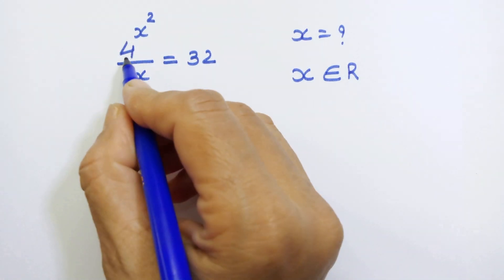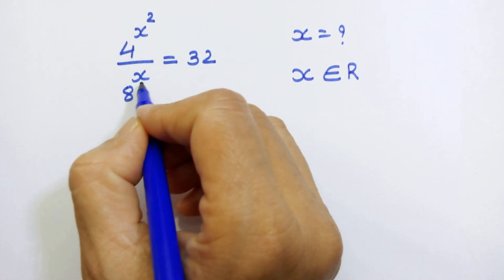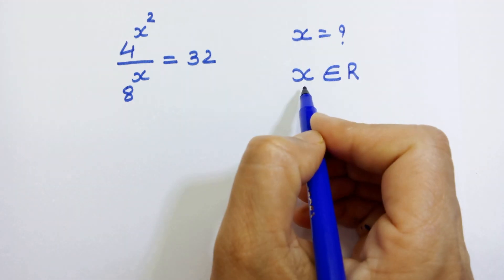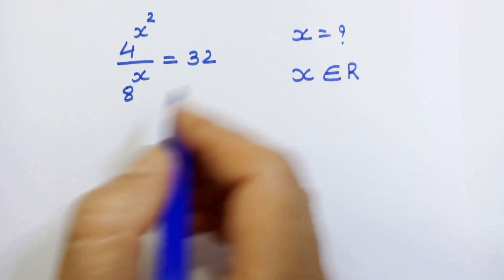Hello friends, now here we have 4 raised to x square upon 8 raised to x is equal to 32 and we have to find the value of x where x is real number. So let's start.